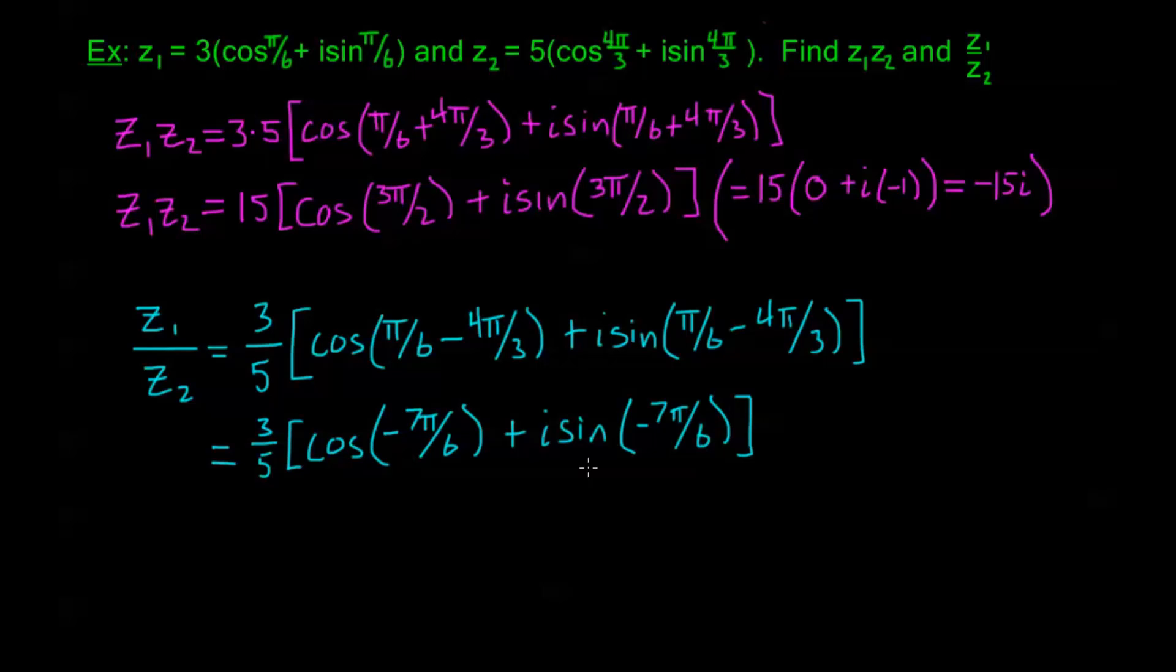Now you're tempted to use the even-odd properties of sine and cosine to pull out those negatives. It would still be the same answer, but for our polar form, we want to keep this positive if we can. This is our standard way of writing polar form. If you're asked to find an angle between 0 and 2π in your final answer, instead of pulling out those negatives, we can just add 2π to negative 7π/6 and get cos(5π/6) plus i sin(5π/6).